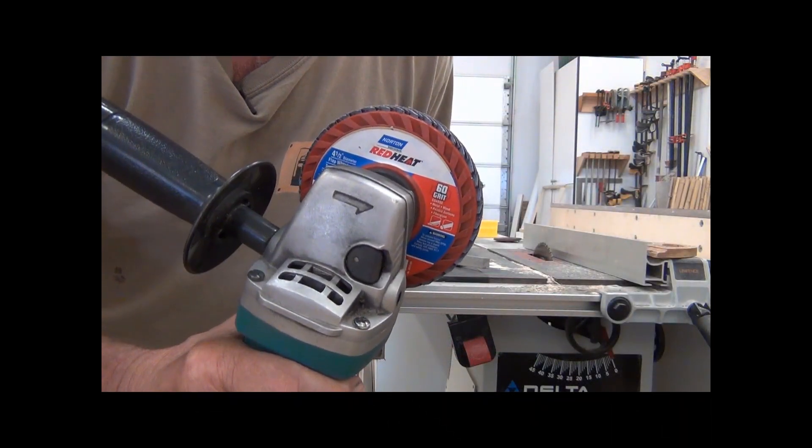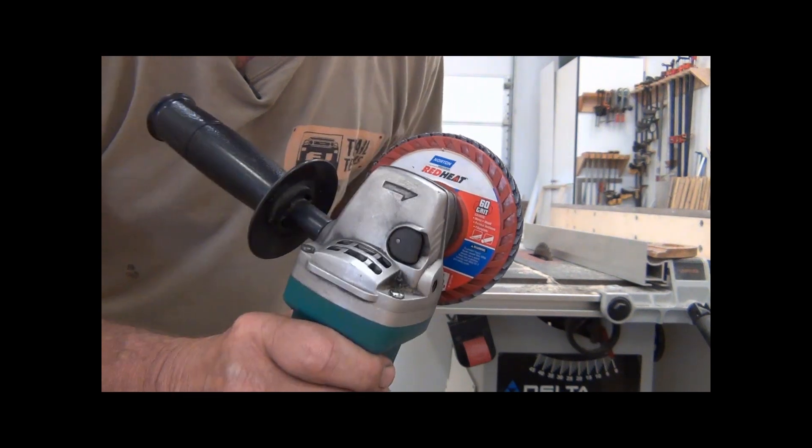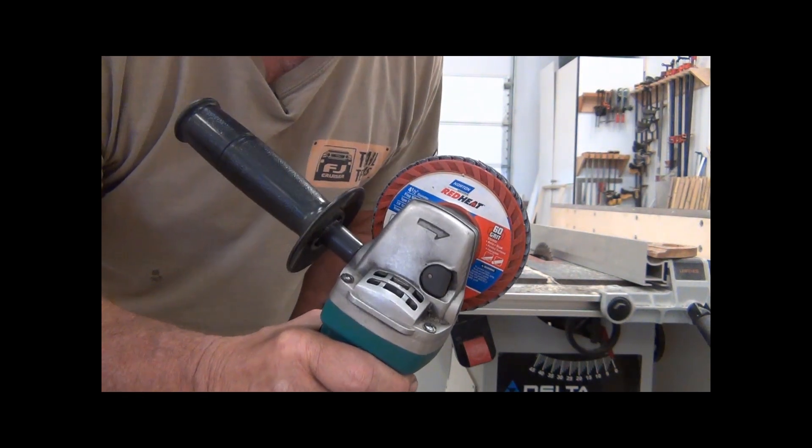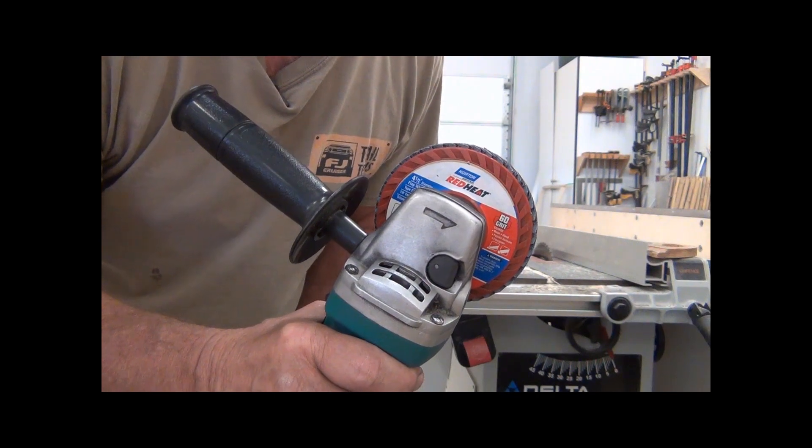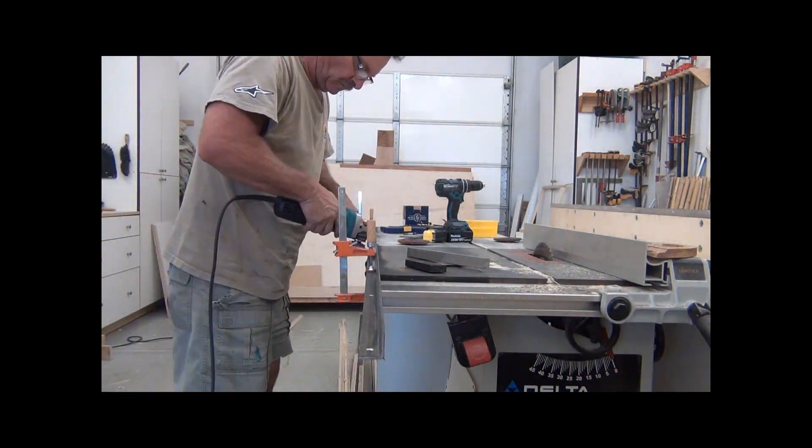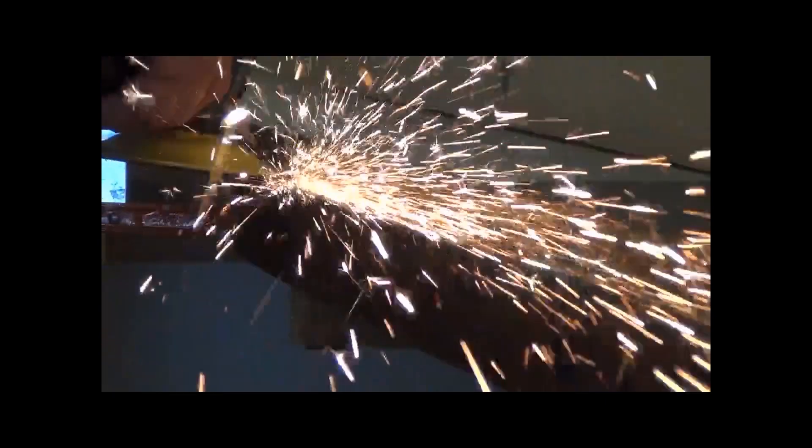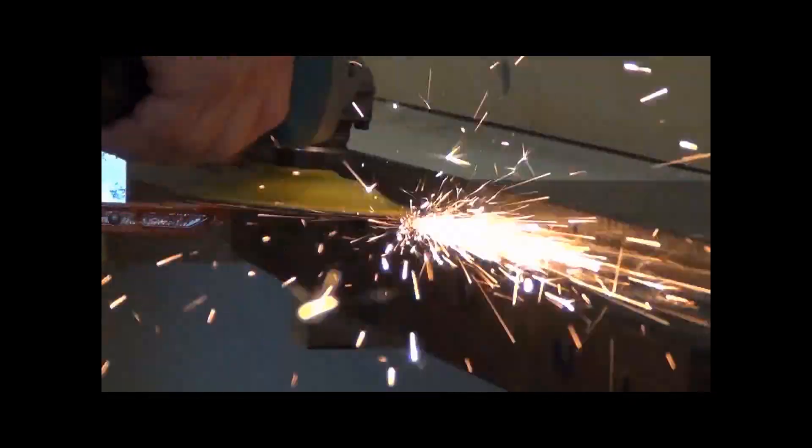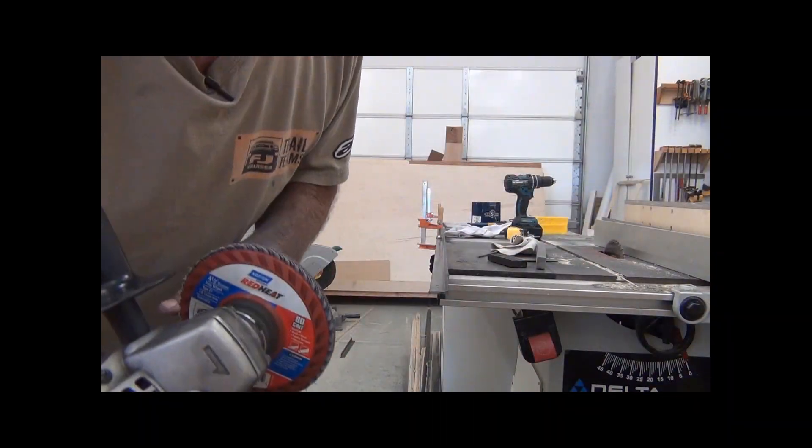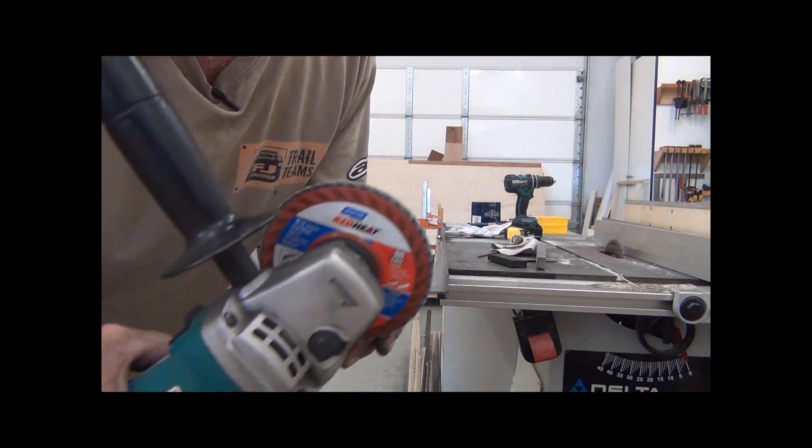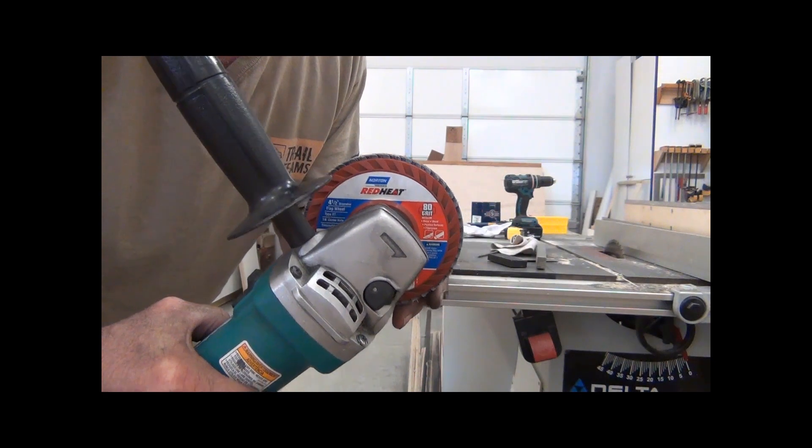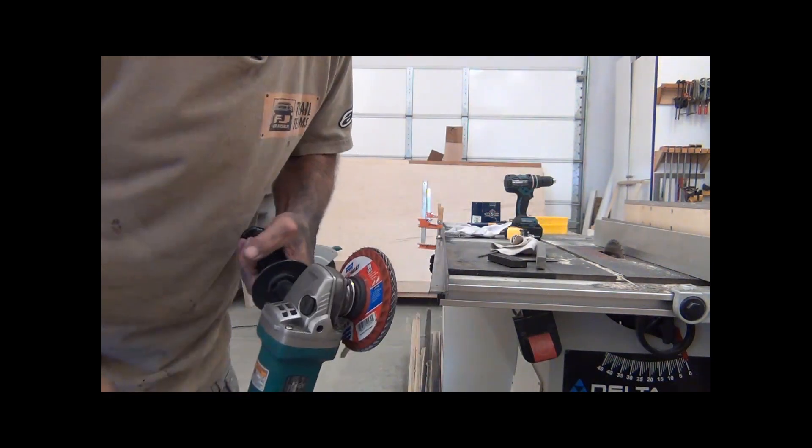Using a 60 grit sanding wheel on a four and a half inch angle grinder, polish it up, make it look pretty. After the 60 a little bit of 80 and that'll smooth it up, make it kind of shiny.